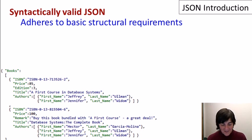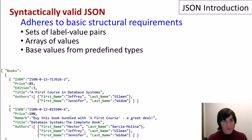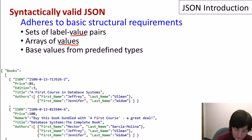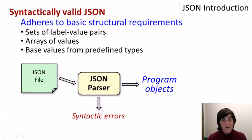Now let's talk about the validity of JSON data. JSON data that's syntactically valid simply needs to adhere to the basic structural requirements — that would be that we have sets of label-value pairs, we have arrays of values, and our base values are from predefined types. These values are defined recursively. So we start with a JSON file and we send it to a parser, which may determine that the file has syntactic errors.